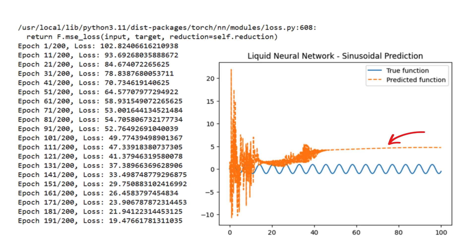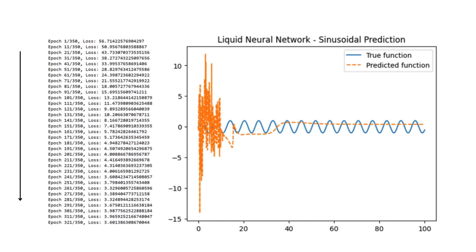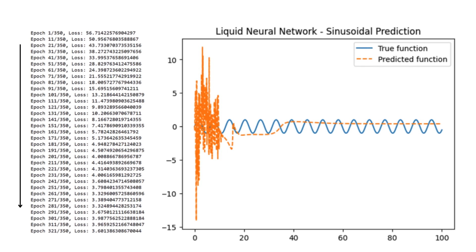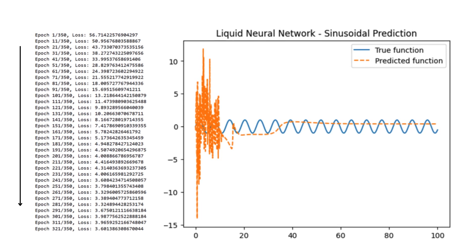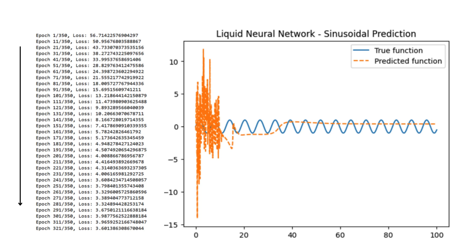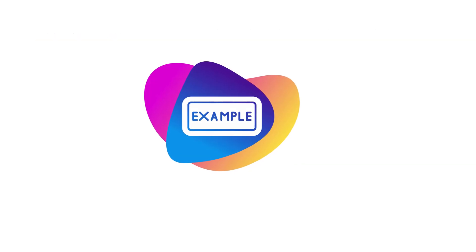By increasing to 350 epochs, you allow the Liquid Neural Network more time to learn the patterns in the data. This is a very common approach — more epochs typically give the model more opportunities to learn, although there is a balance to strike to avoid overfitting. Since improvements were seen, it suggests the model needed more training time to fully capture the underlying sine pattern. Do keep an eye on the training curve for any signs of overfitting if you go beyond 350 epochs.